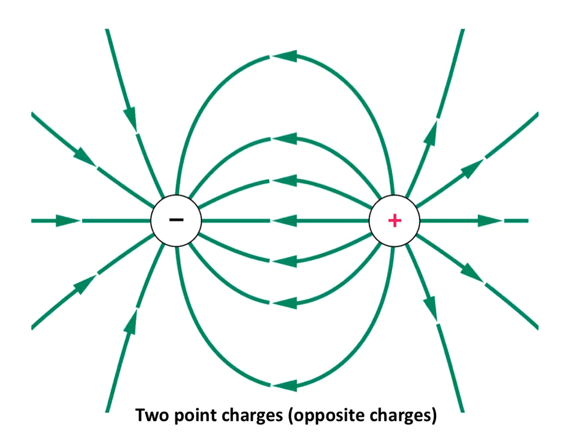If we have two objects of opposite charges, then you'll have a pattern like this. As I said earlier, the arrows always point away from the positive and towards the negative. Between them, there'll be a straight line. As you move away in a two-dimensional plane, it gets a little bit more complicated.